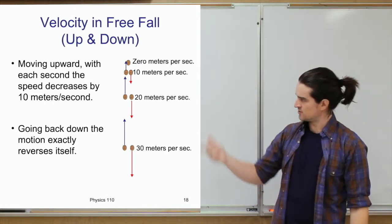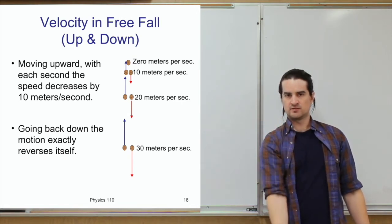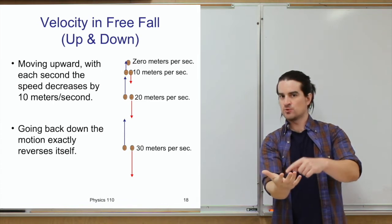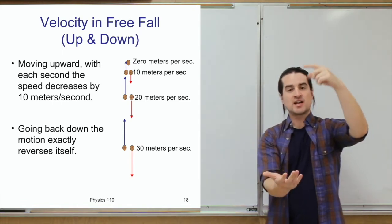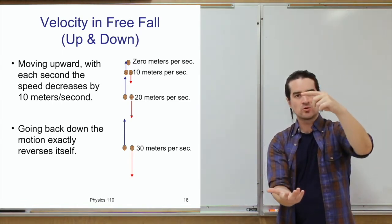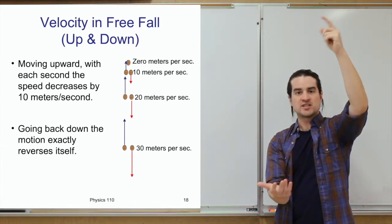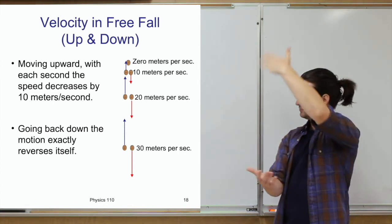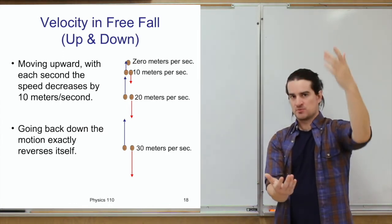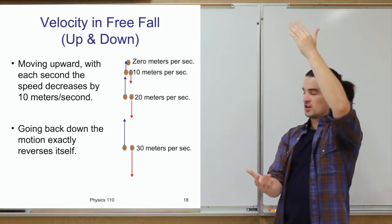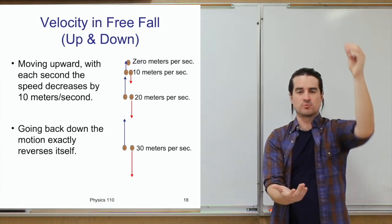If you toss an object upward at 30 meters per second, after one second gravity decelerates it by 10 m/s, so it's now moving at 20 m/s upward. After another second, 10 m/s. After another second, zero velocity — it reaches its peak and starts to move downward.